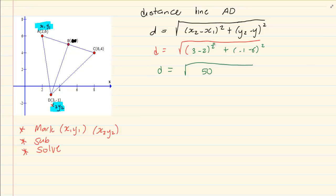3 minus 1 is 1 squared which is 1. Minus 1 minus 6 is minus 7 squared gives us positive 49 which is equal to root of 50. So the first thing you learn usually in grade 10 is your distance.